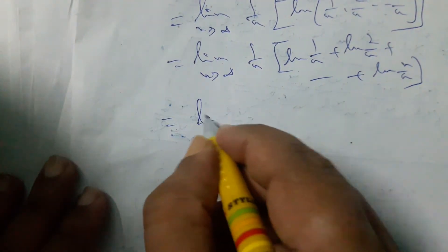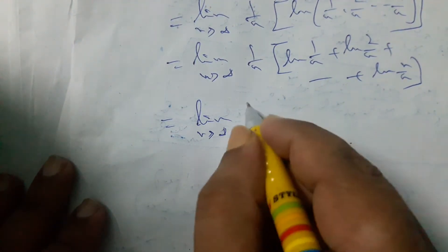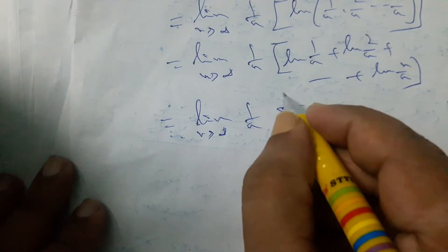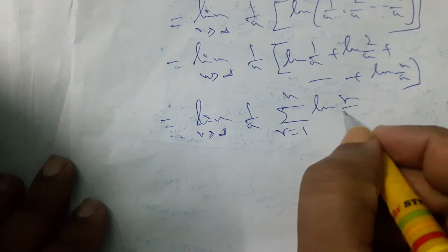So it can be written as limit as n tends to infinity, 1 by n, summation r equals 1 to n, ln r by n.